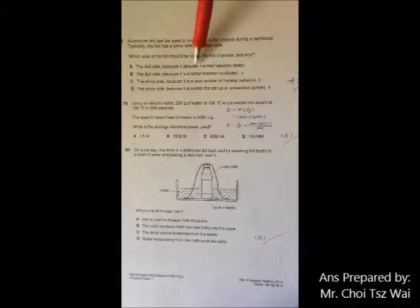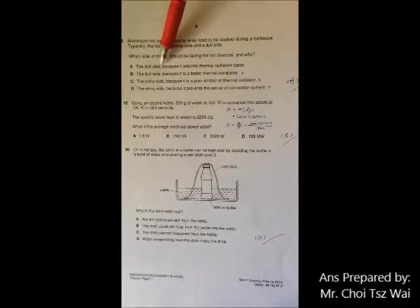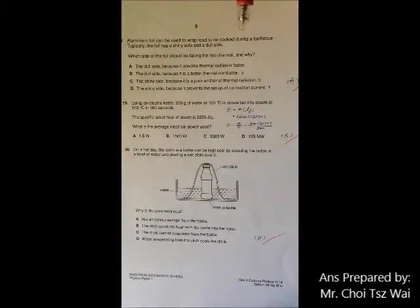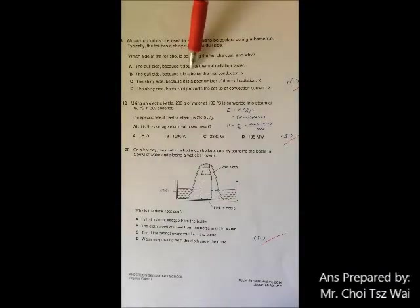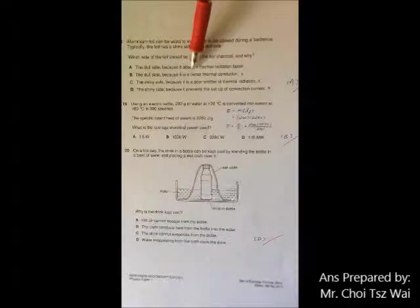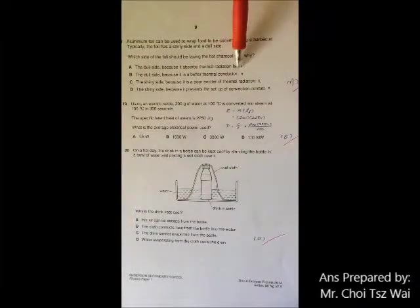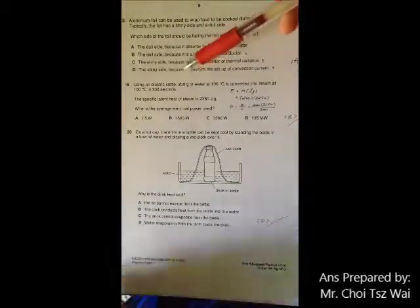So A, dull side, it absorbs the radiation faster. So it is correct because the heat source is the charcoal. So the potato or the aluminum foil is taking a role of absorber. And if it is correct, dull means that you can absorb faster. And that is the purpose, right? You want the potato to cook fast.